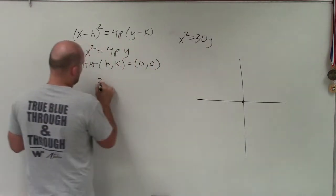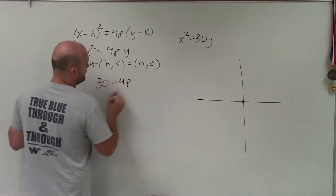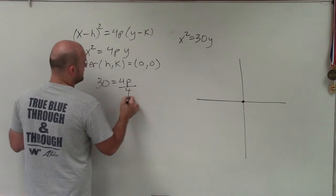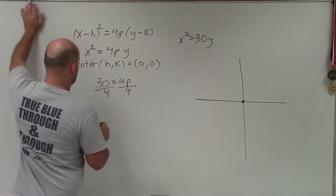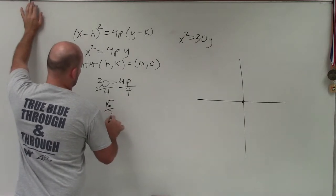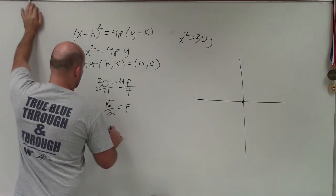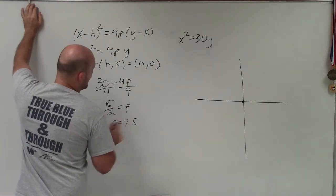So really, 30 = 4p. Divide by 4, 30 divided by 4 reduces to 15/2, which equals p, which is roughly p = 7.5.